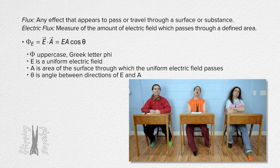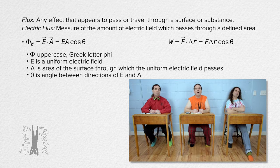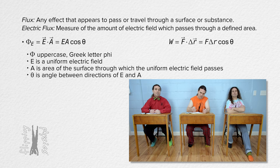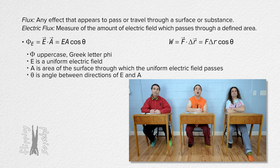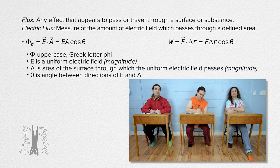This equation has the same form as the work equation for a constant force. Work equals the dot product of force and displacement, or force times displacement times the cosine of the angle between the force doing the work and the displacement of the object. That means we should use the magnitudes of the electric field and area, and that the value of the cosine of the angle between the electric field and the area determines if the electric flux is positive or negative.